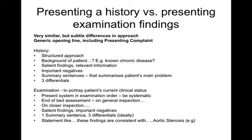So what's the difference in presenting for a history compared to presenting for a clinical OSCE? Your approach is often very similar, but there are subtle differences. I would always suggest starting with a generic opening line, such as the presenting complaint. When presenting for a history, give a line for the presenting complaint, a brief background, the chronic diseases, the salient findings and the important negatives. Conclude with a summary sentence, your clinical impression, and try to give three differentials.